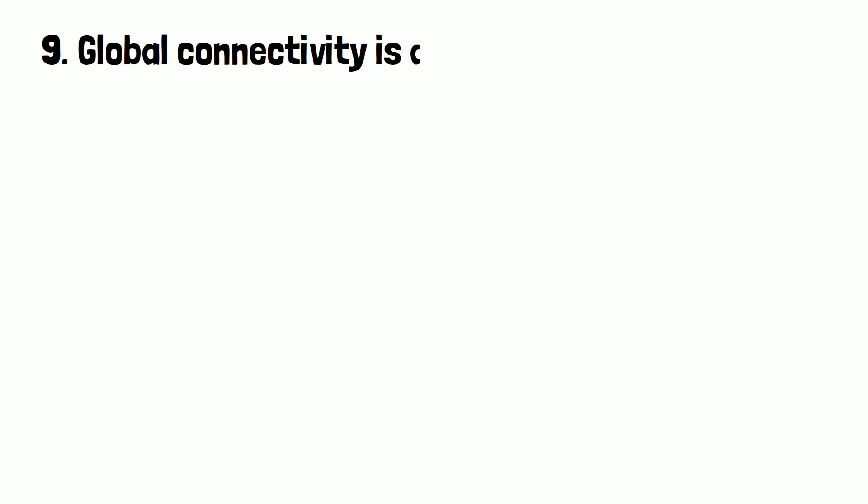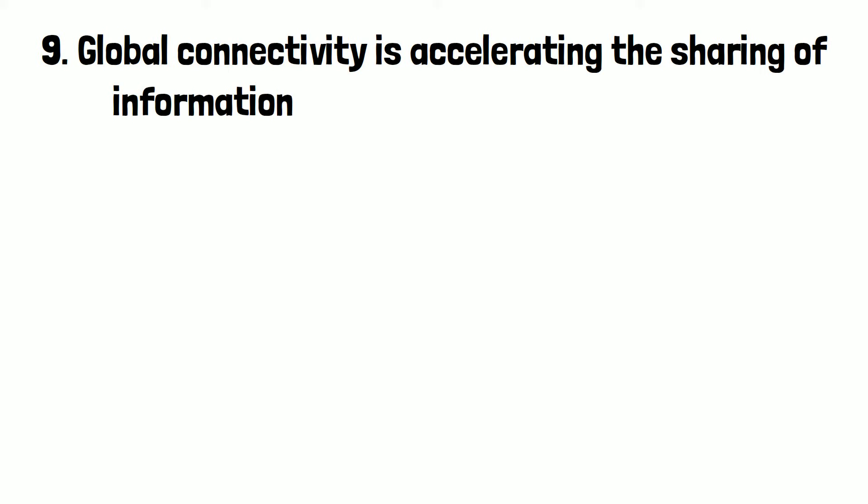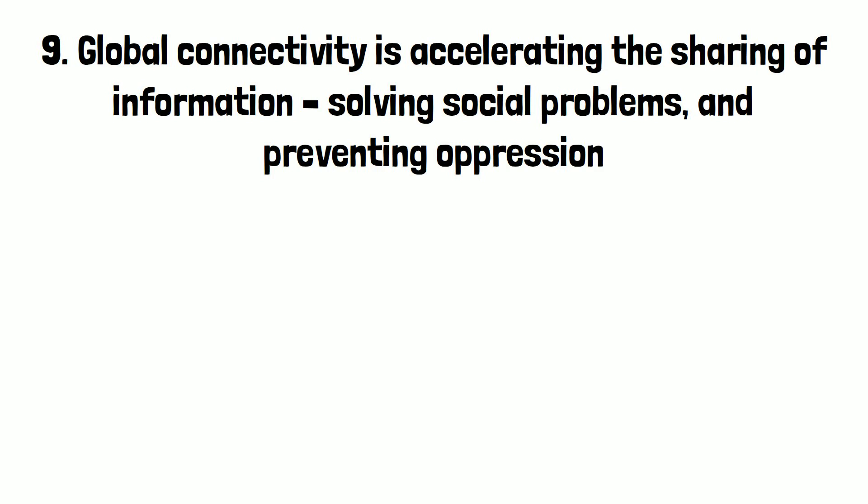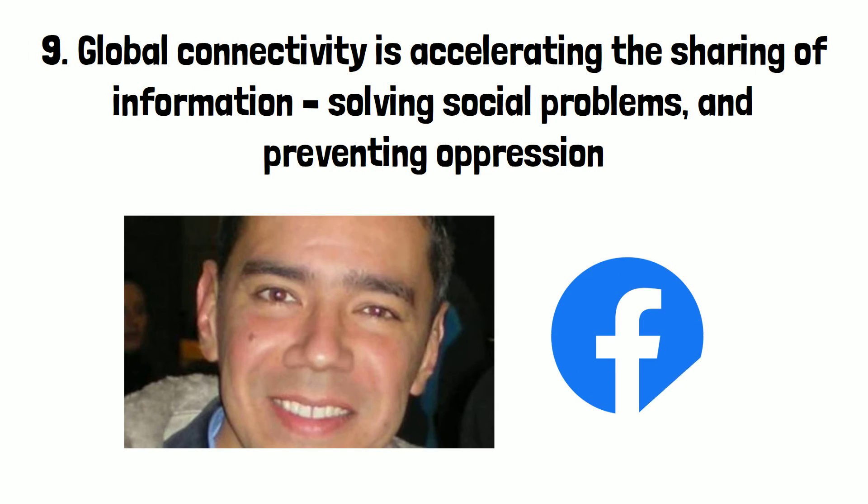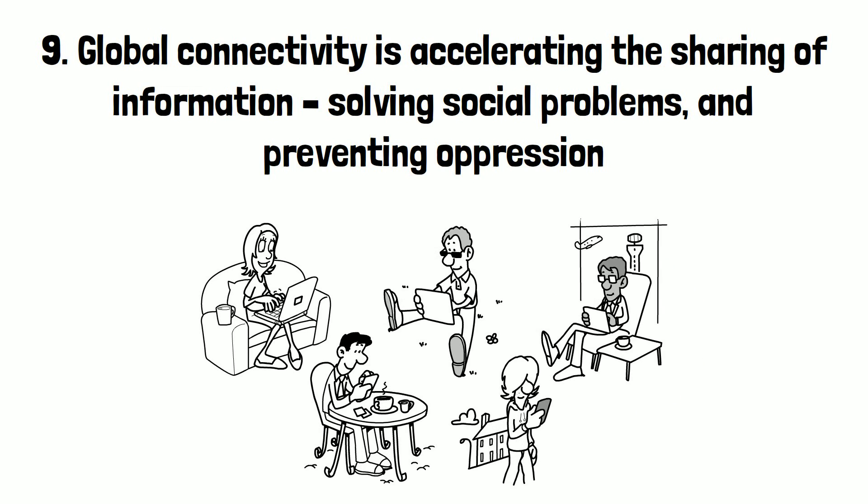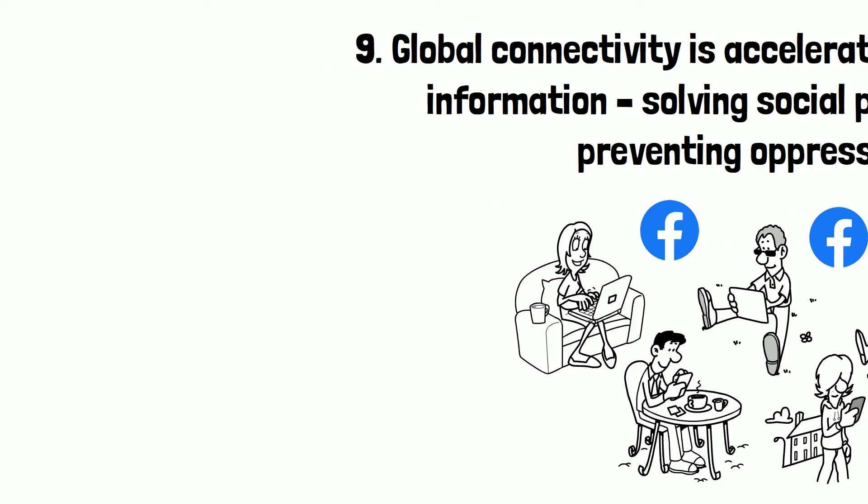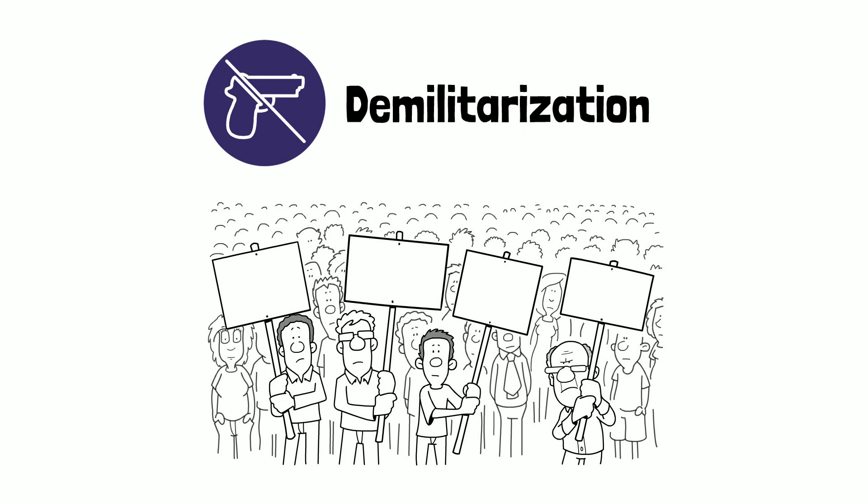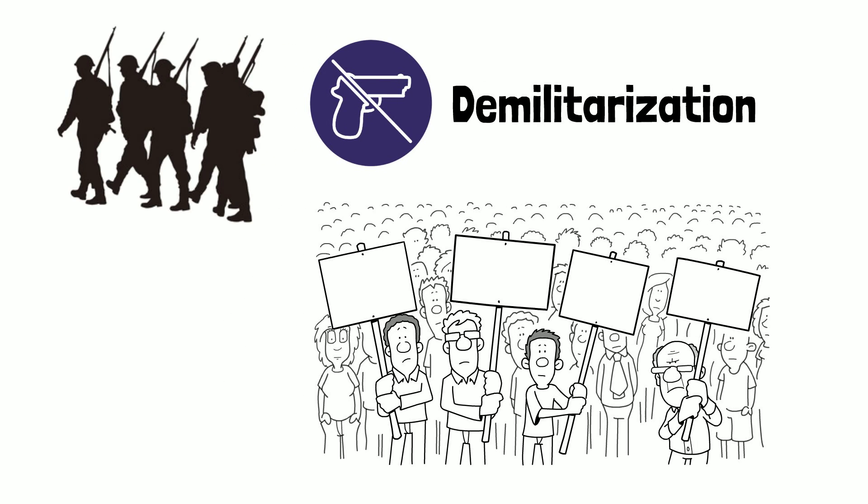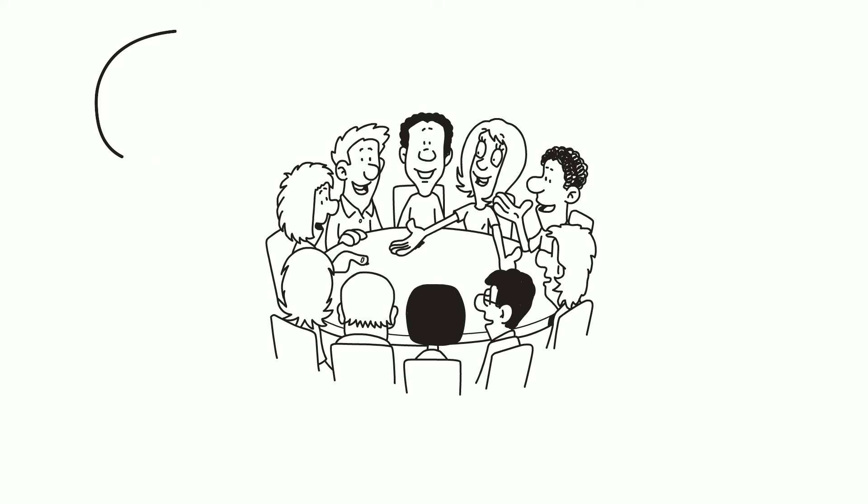Number 9. Global connectivity is accelerating the sharing of information, solving social problems and preventing oppression. When Oscar Morales created a Facebook group in 2008, he could never have imagined the consequences. A month later, 12 million people were out in the streets protesting in 200 cities, which led to a massive wave of demilitarization with soldiers leaving the FARC.